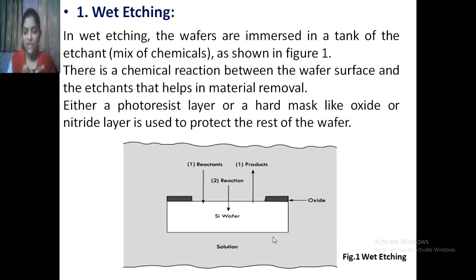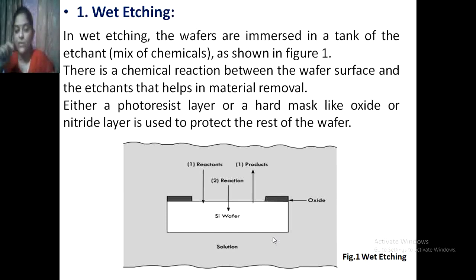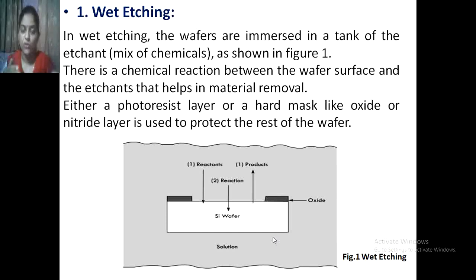Either a photoresist layer or a hard mask — like an oxide or nitride layer — is used to protect the rest of the wafer. If we place the wafer as-is into the solution, all the material would be etched, but we want only a specific area to be etched. The remaining part of the structure must be protected from the etchant using a photoresist layer or hard mask such as oxide.